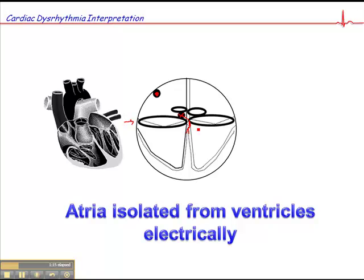These fibrous connective tissue rings — sometimes people refer to them as the skeletal system of the heart — they support the valves, but they isolate the atria from the ventricles.